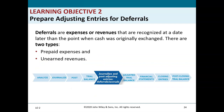Learning objective two: prepare adjusting entries for deferrals. Deferrals are expenses or revenues recognized at a date later than when cash was originally exchanged. The two types are prepaid expenses and unearned revenues. We will go through examples of how to prepare the adjusting entries for each.